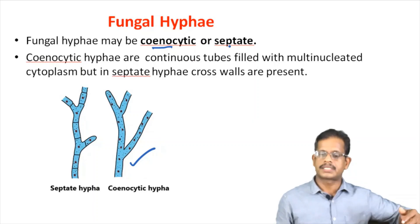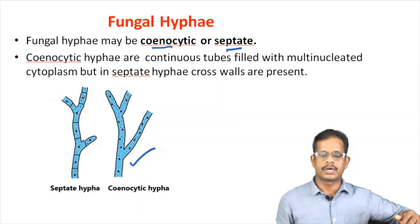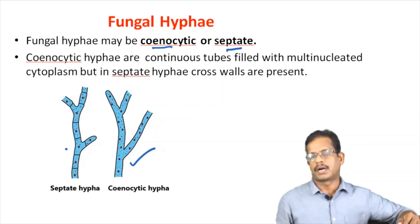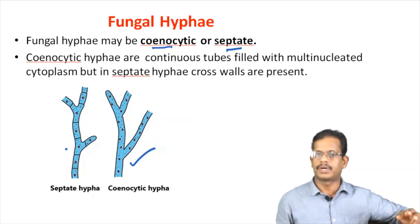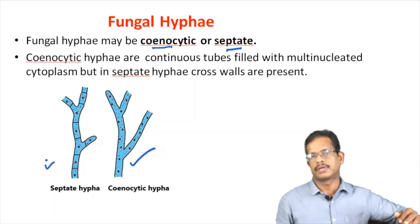The other type of hypha is called septate hypha. In septate hypha, we have cross walls dividing it into individual cells, each with one cell.